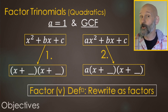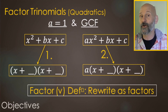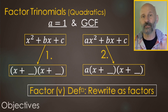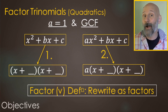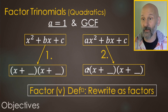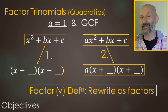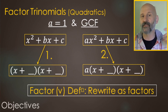A quick definition: factoring as a verb means to rewrite your expression as factors. Remember, factors are things being multiplied. So we're rewriting this — instead of being added (plus plus plus) we get this times this. We're rewriting it as things being multiplied, as factors.